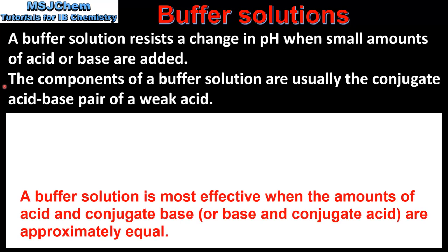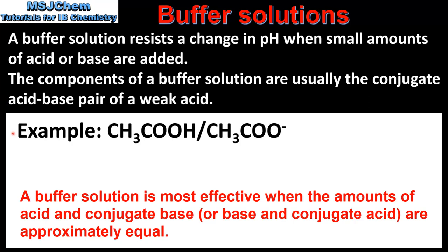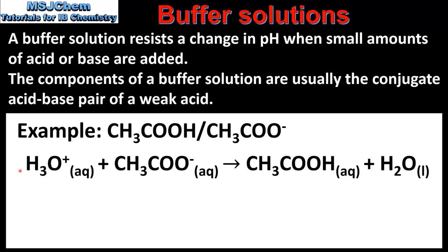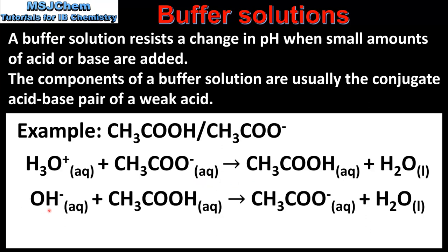The components of a buffer solution are usually the conjugate acid-base pair of a weak acid. For example, here we have a conjugate acid-base pair which is ethanoic acid and the ethanoate ion. When acid is added to the buffer solution, the added hydronium ions react with the ethanoate ions to produce ethanoic acid and water. If a base is added, the added hydroxide ions react with the ethanoic acid to produce ethanoate ions and water. By reacting with the added hydronium or hydroxide ions, the conjugate acid-base pair enable the buffer solution to resist a change in pH.